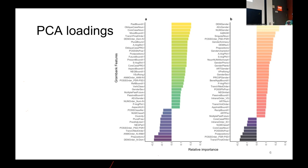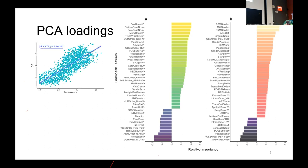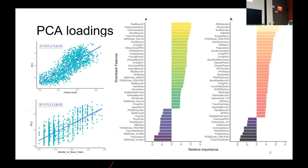We compute the fusion score per language and take the PC1 coordinate per language, and they're quite correlated. Similarly, when we do the same for gender and noun class features, we find a correlation with PC2. So we can interpret our second component as mainly having to do with how much gender or noun class your language has. That gives us some insights into our data.